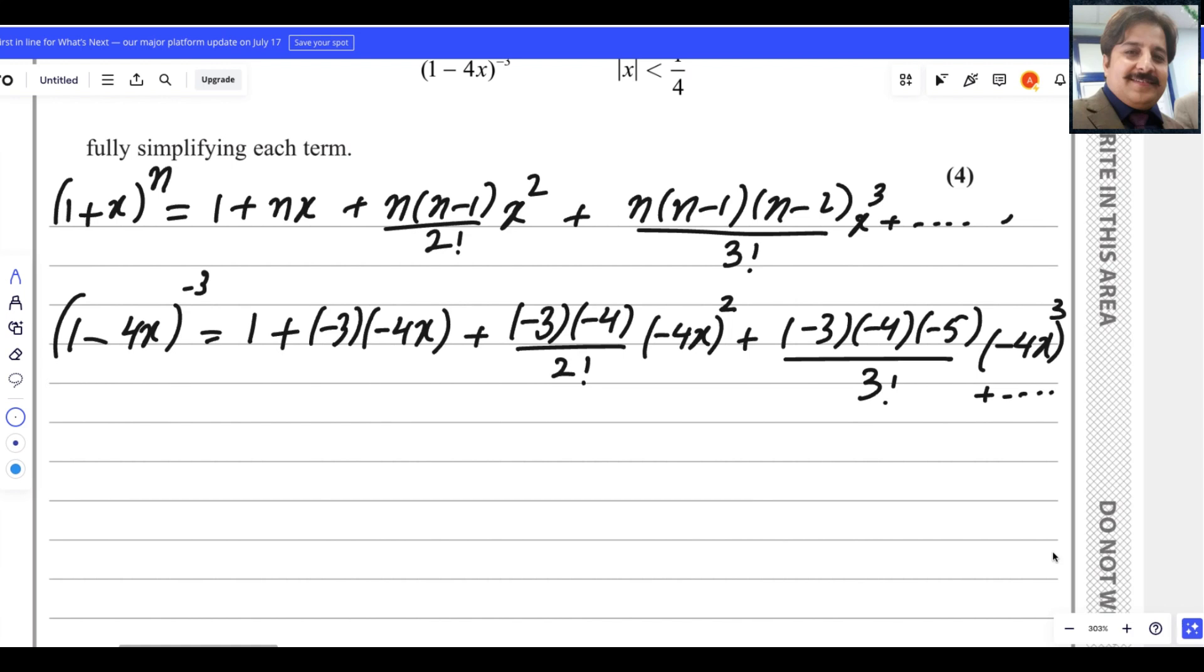Now the next step will simplify the numbers. So it will be 1 - 3 times -4 is +12, so 12x. You can solve: -4 × -3 is +12, 12 ÷ 2 is 6, and this answer is 6. And here, -4² is 16, 16 × 6 is 96, so +96x².